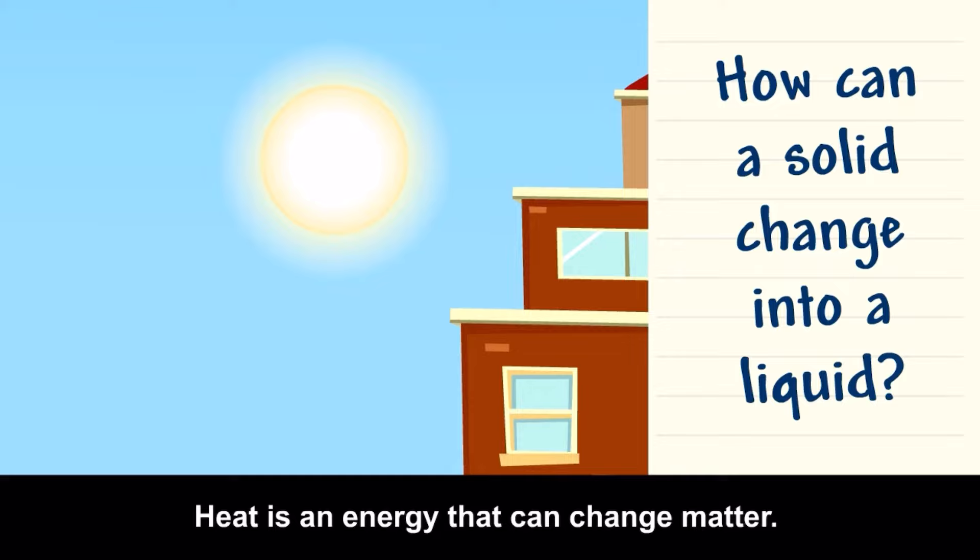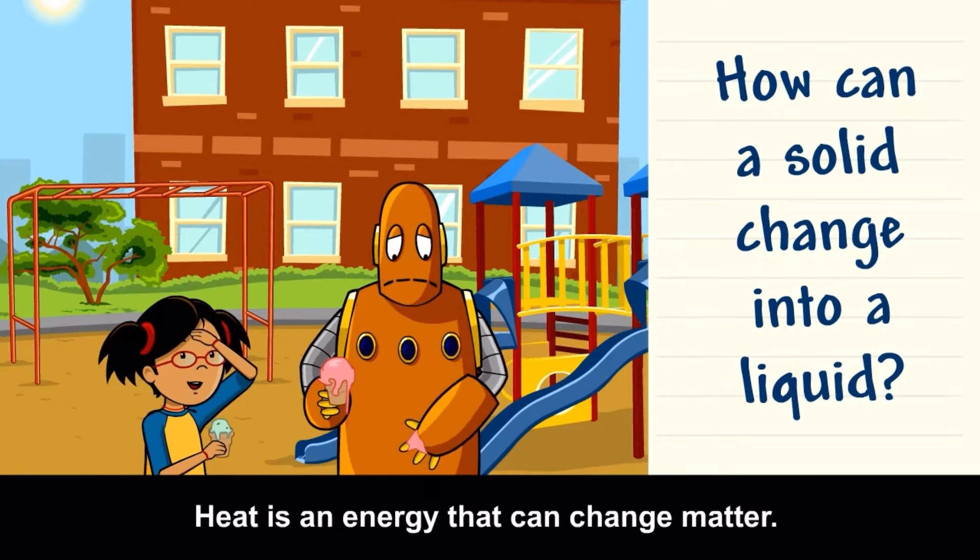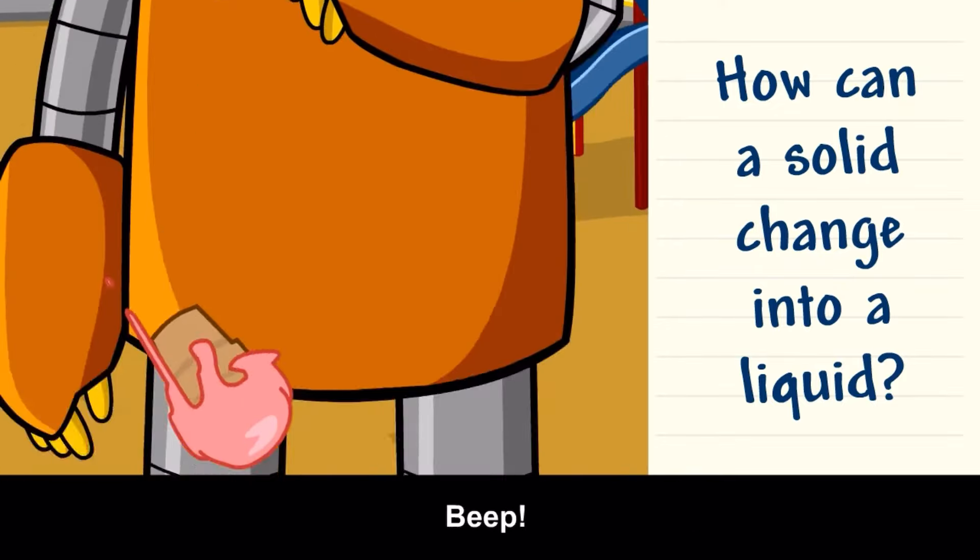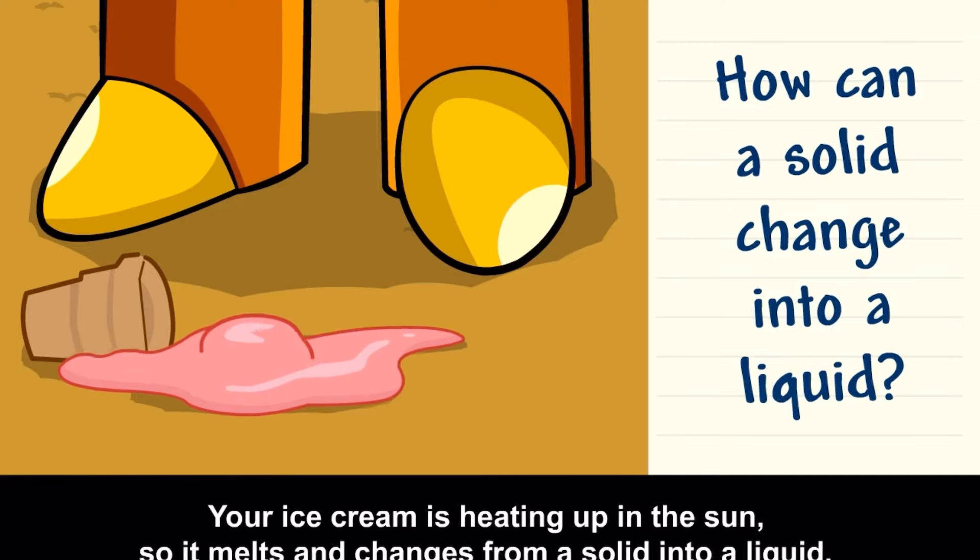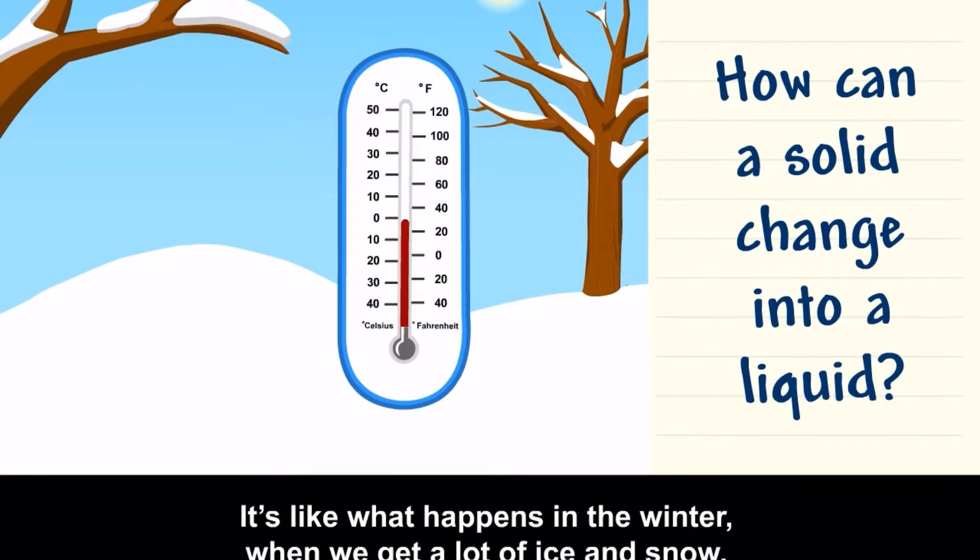Heat is an energy that can change matter. Your ice cream is heating up in the sun, so it melts and changes from a solid into a liquid. It's like what happens in the winter when we get a lot of ice and snow.